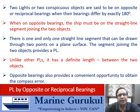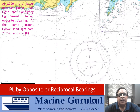Opposite bearings also provide a convenient opportunity to obtain the compass error. Let us understand this PL and its use for getting the compass error through a small example. At 2000 hours, a vessel observes Hook Head light and Conning Baked light vessel to be on opposite bearings. At the same instant, Hook Head light bore 293 degrees gyro and 296 degrees compass.